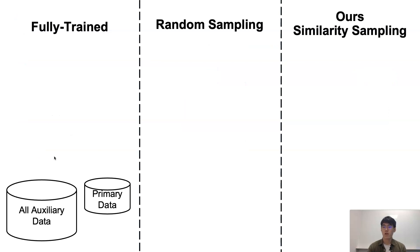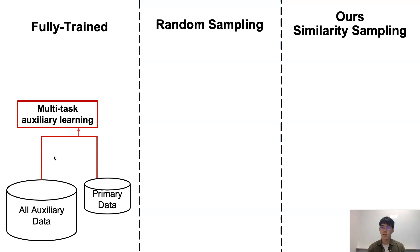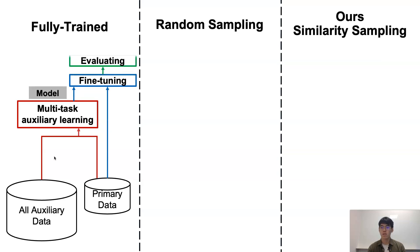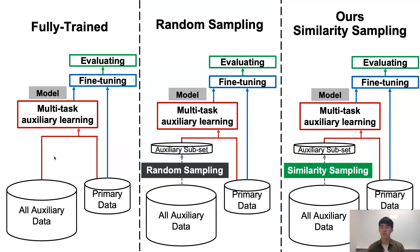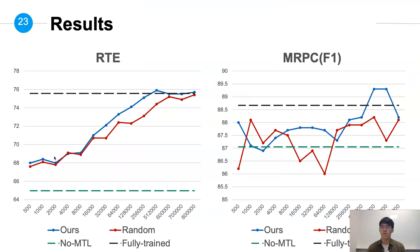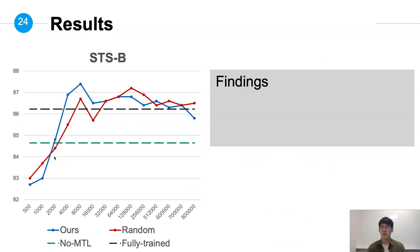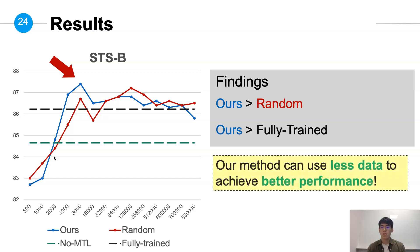For the fully trained baseline, we simply perform multitask auxiliary learning on all auxiliary data, then fine-tune the model on the primary task and evaluate results. For random sampling and similarity sampling, we do a sampling step before multitask auxiliary learning. Our method achieves the highest scores on RTE, MRPC, and STSB. Our proposed method can outperform random sampling and even surpass the fully trained model, meaning our method can use less data and computing time to achieve better performance.